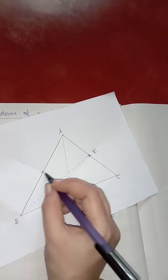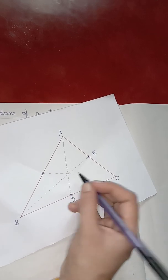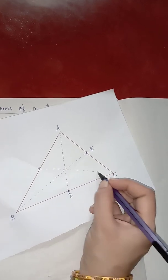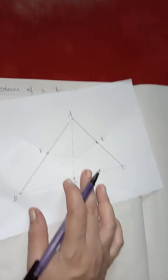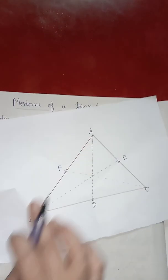If you join this point to the opposite vertex C, you get median on line A, B.